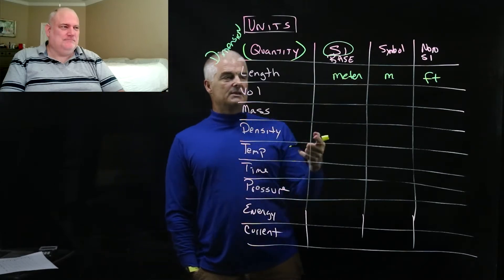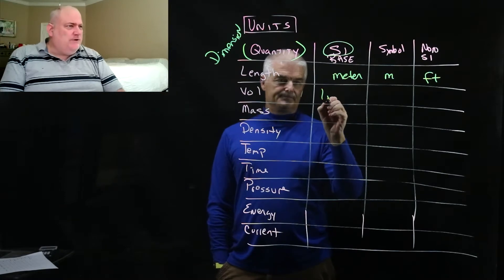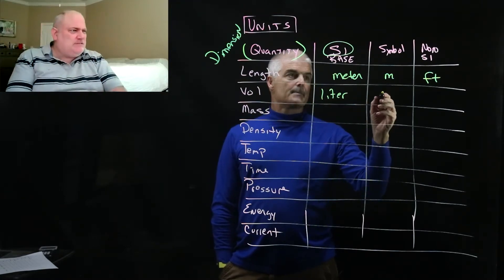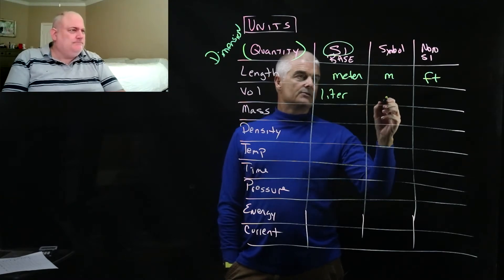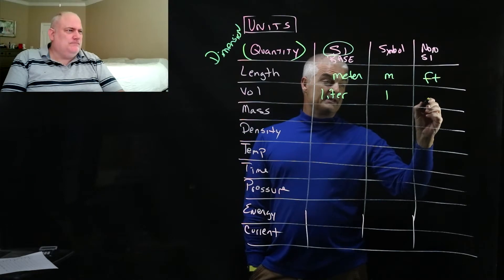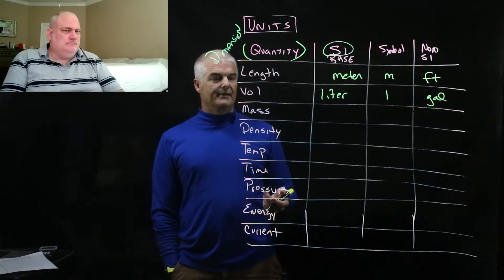So for example, you probably know this, the SI base unit for length is a meter, which we symbolize an M. But a non-SI system, so something that's not like would be a foot, right? So that would be in the sort of the US or the imperial system. Volume. What's the SI base system, Mr. D, for volume?